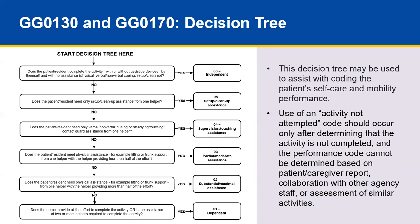As we've gone through the previous slides, we've discussed and described each of the codes for answering the self-care and mobility questions. As adult learners, we each learn and understand things differently. We've outlined the codes to answer these queries in a decision tree format. This decision tree may be used to assist with coding the patient's self-care and mobility performance. Use of an activity not attempted code should occur only after determining the code is not completed and performance code cannot be determined based on patient-caregiver report, collaboration with other staff, or assessment of similar activities.